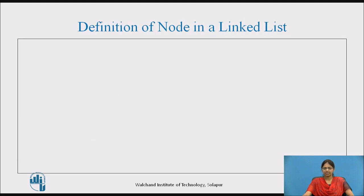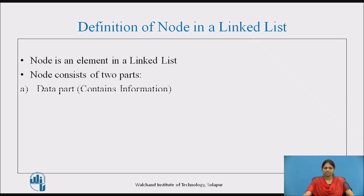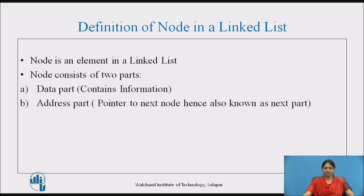Definition of node in a linked list: A node is an element in a linked list. It consists of two parts — a data part which contains the information, and the address part which is a pointer to the next node, hence also known as the next part.